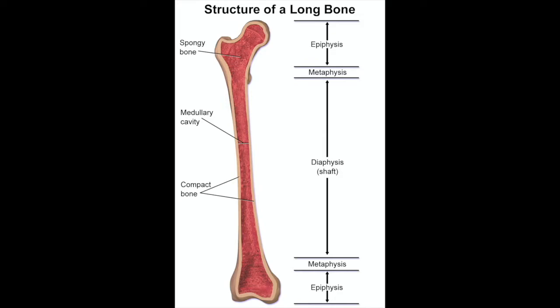On board exam, if you have an epiphyseal tumor, that's basically giant cell bone. It usually arises in the distal femur or the proximal tibia around the knee, and it's kind of similar in location to osteosarcoma, actually.